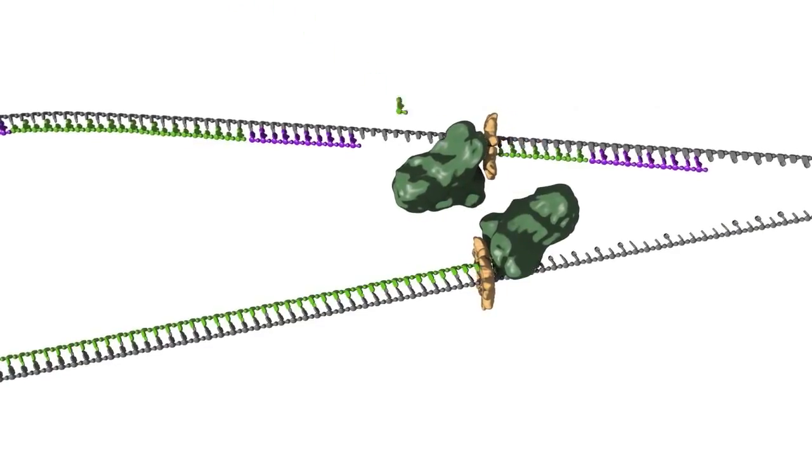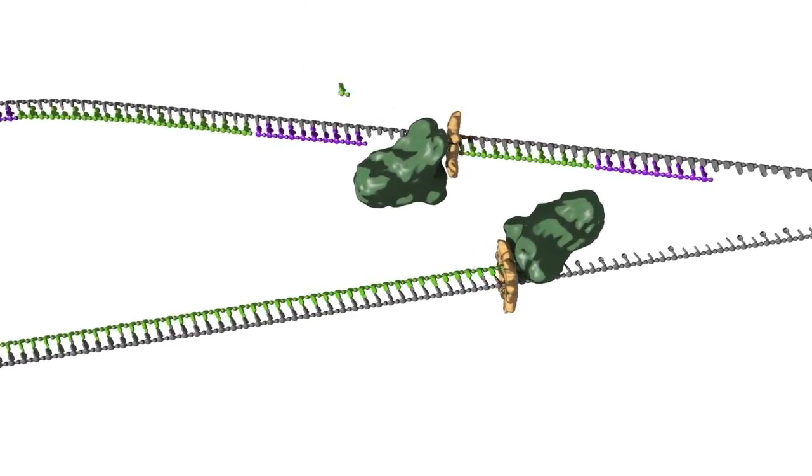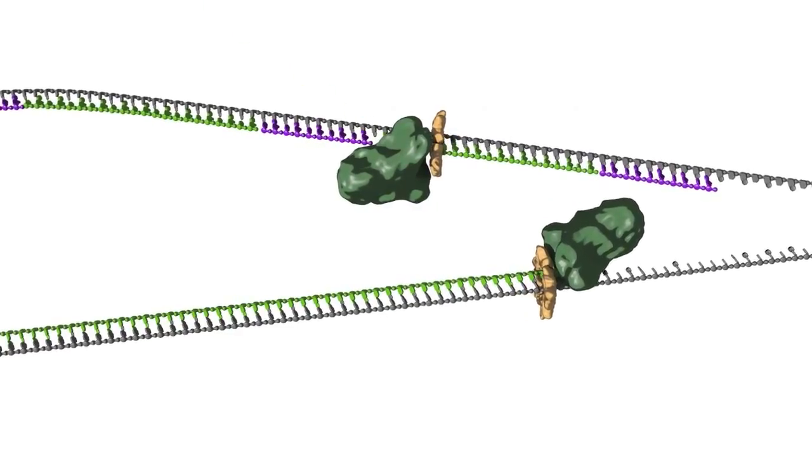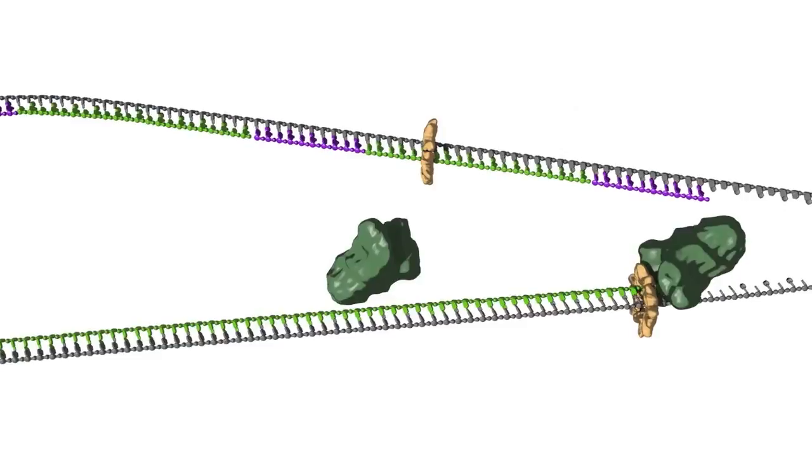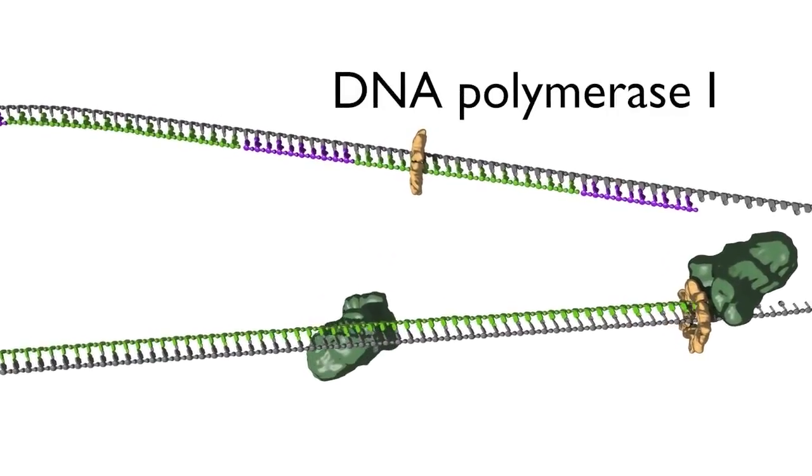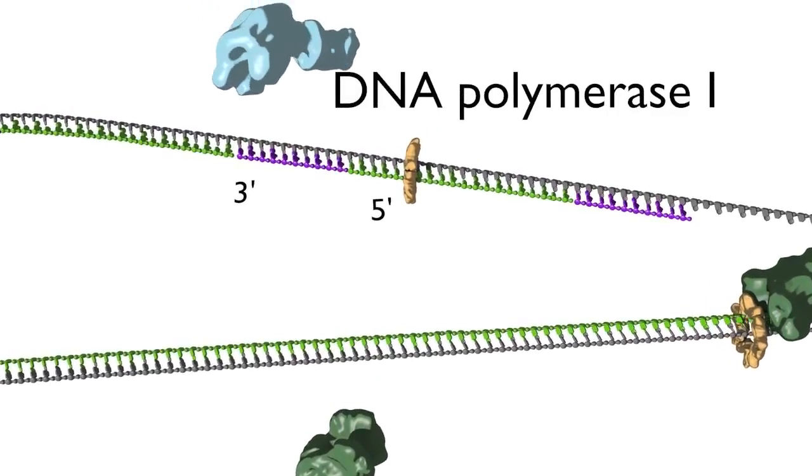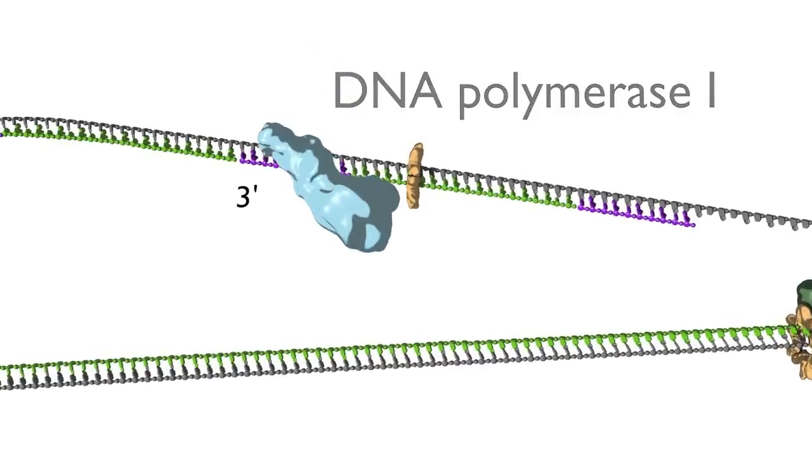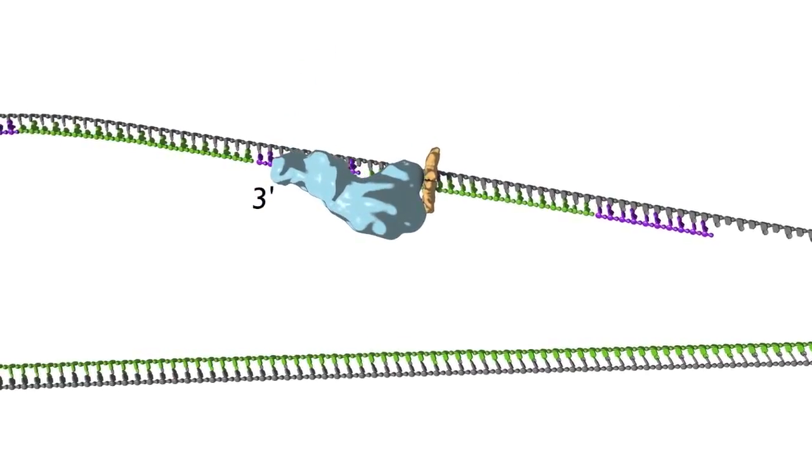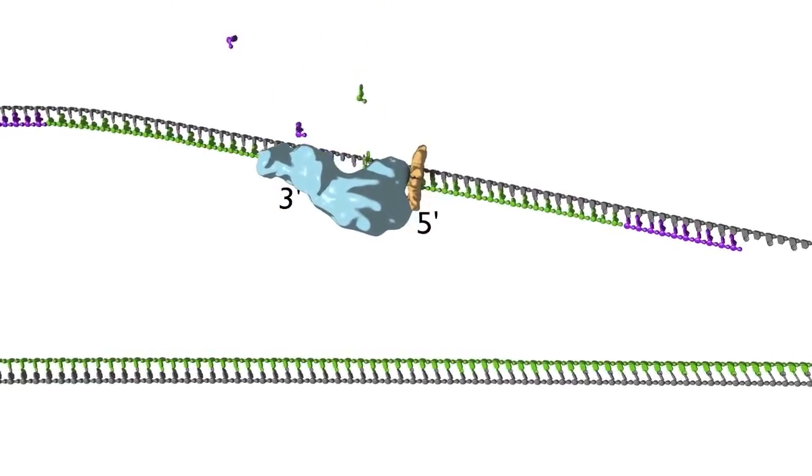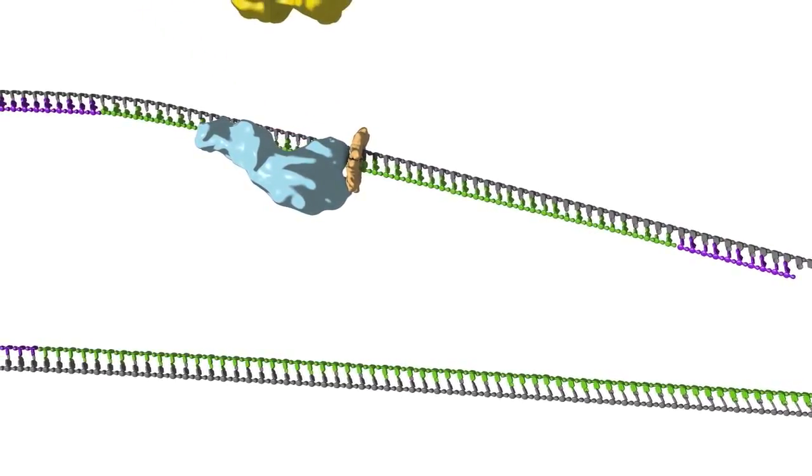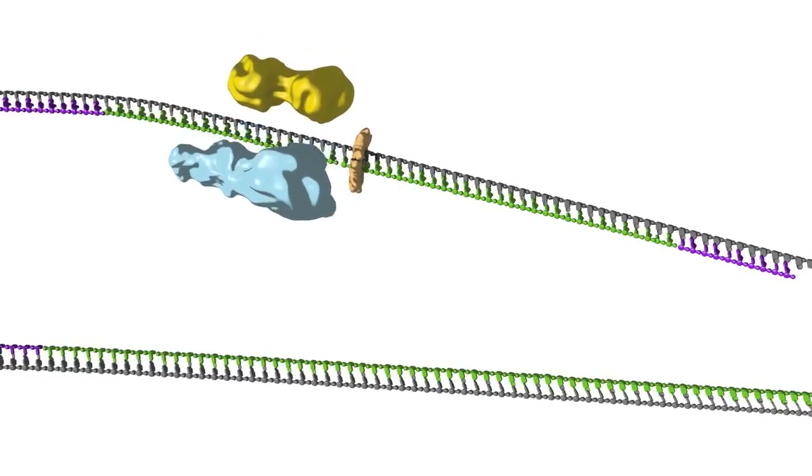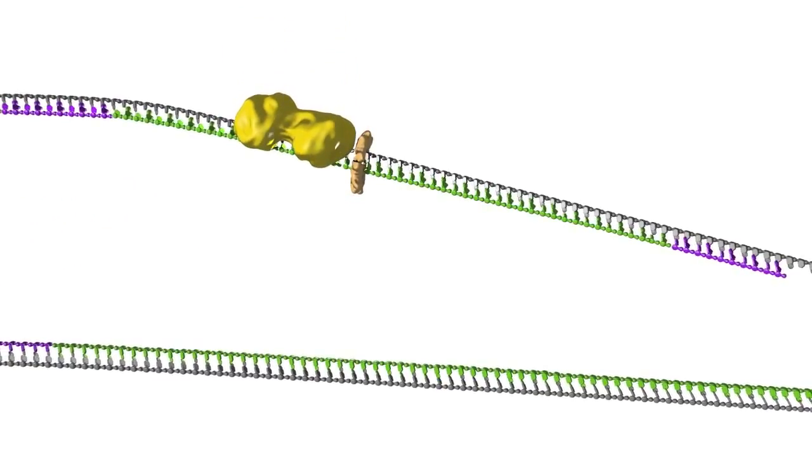When the lagging strand polymerase runs up against a previously made Okazaki fragment while in the process of synthesizing DNA, the replicative DNA polymerase 3 is replaced by DNA polymerase 1, which has five prime to three prime exonuclease activity. This exonuclease then degrades the RNA primer in front of it, synthesizing DNA as it goes. Once the RNA primer is removed, the two sections of DNA are joined by DNA ligase.